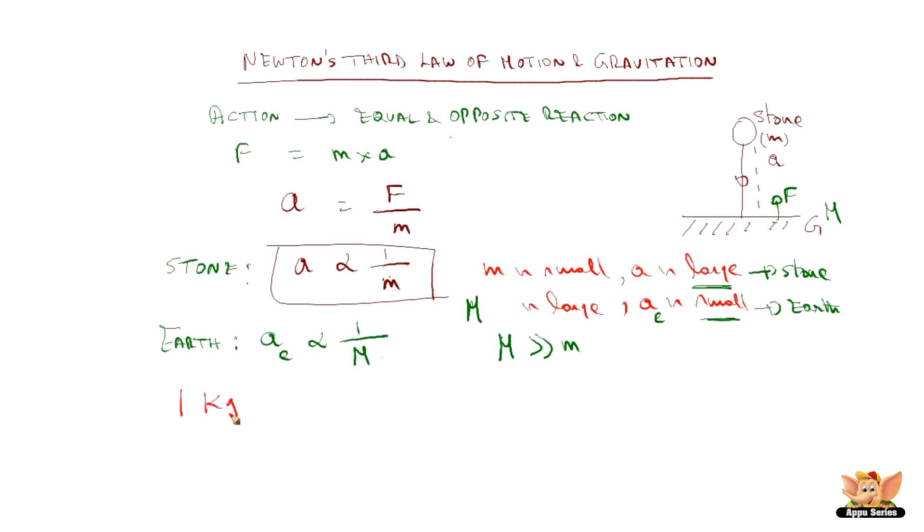Now when we take 1 kg of stone and calculate acceleration, it will be 9.8 meters per second square. And the same when we calculate for the earth mass, the acceleration earth experiences will come out to be 1.63 into 10 to the power minus 24 meter per second square. So we can make out that this is very large acceleration, whereas this is negligible. Hence the earth never moves, or even if it moves, it is not to be felt or seen by us.